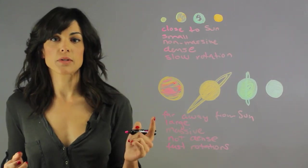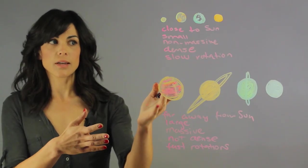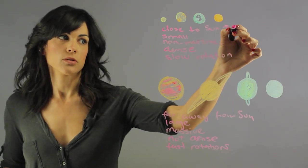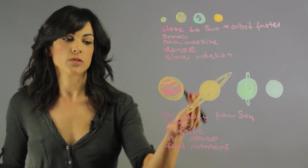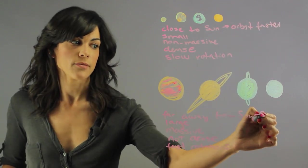Now in terms of orbit around the sun, because these are closer to the sun, they orbit faster. And because they're so far away from the sun, they have slow orbits.